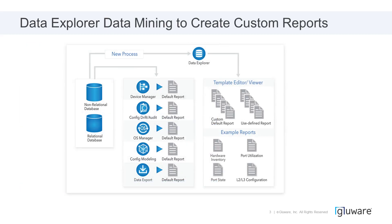We put together this image to help visualize what is available now with the new Data Explorer app. Traditionally when you use Glueware, you would navigate into an application like Device Manager or Config Drift and Audit, perform an inventory or a drift or an audit, and then the underlying Device Explorer would populate with all the results. From Device Explorer in each app, you can export out your default report — a set of fixed columns and rows. We refer to that as the default report.